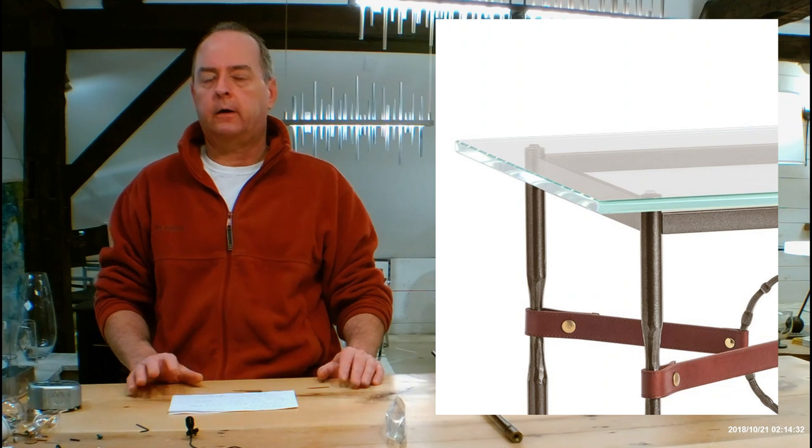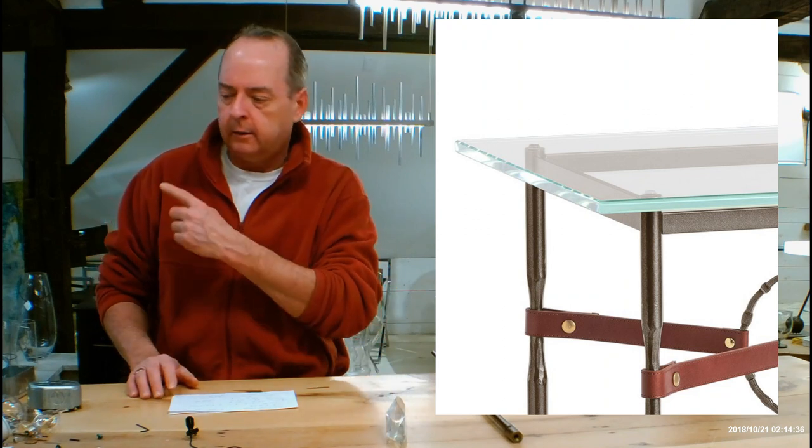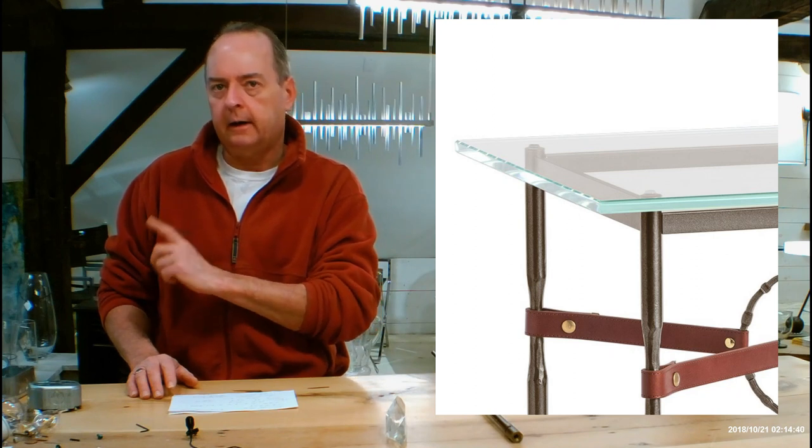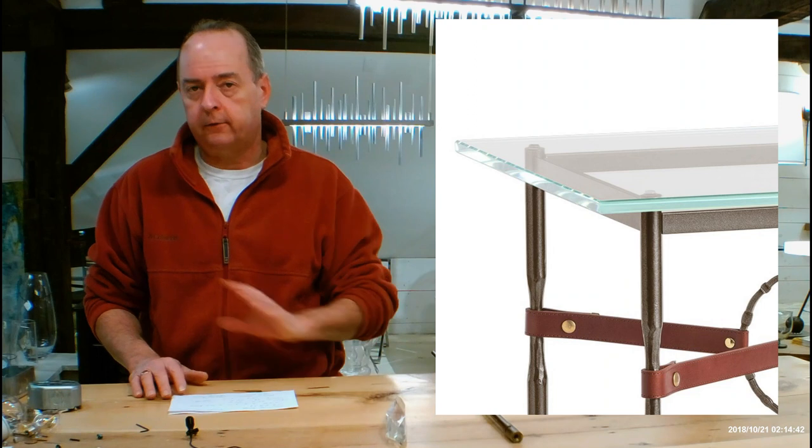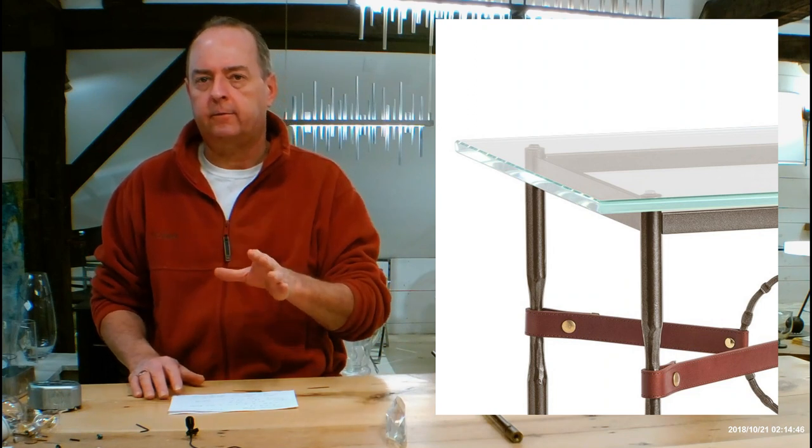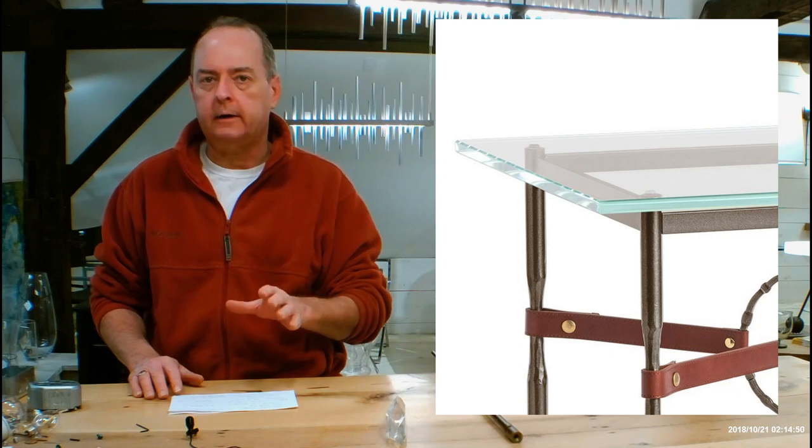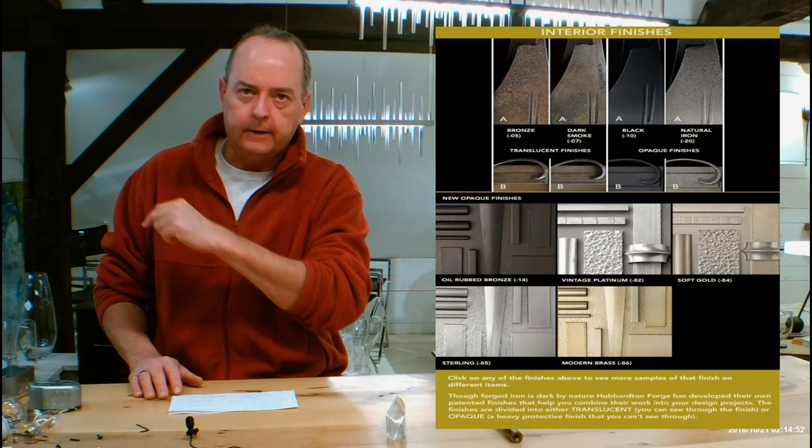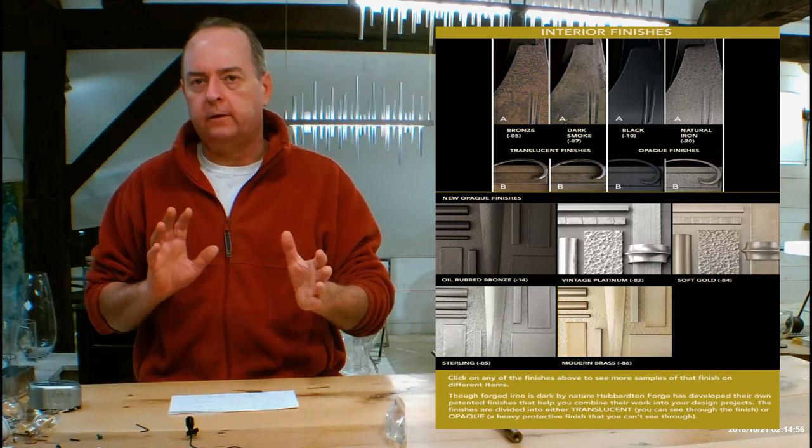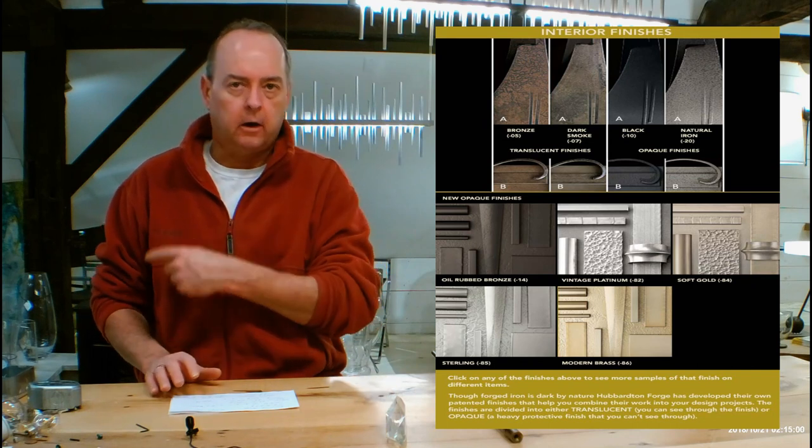Let's get into finishes now. If you're on the handmadeinvermont.com website, look over on this side of the screen, midway down you're going to see a tab that's going to say Finishes Help Guide. Click on that for me. There's going to be a video on there of me talking to you guys about the differences in Hubberton Forge finishes and how they can look on different types of forging. I'm going to be talking about a chart a little farther down on the page.